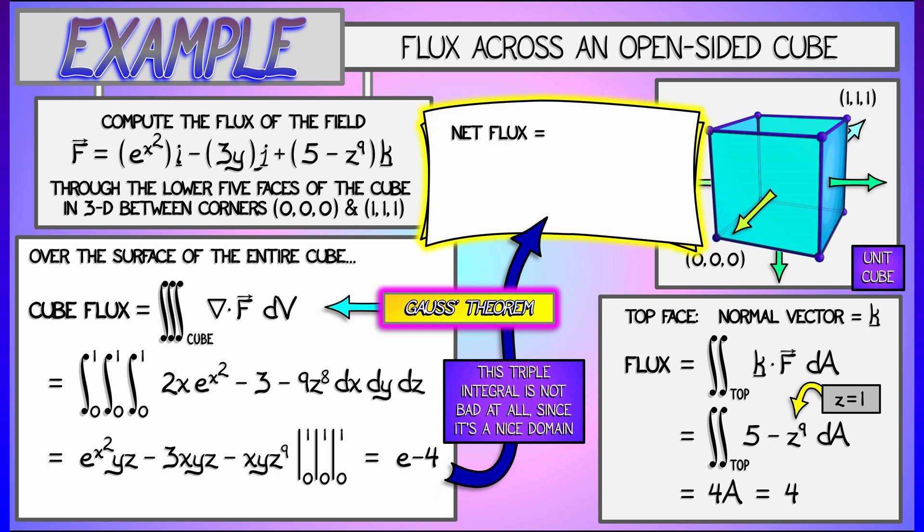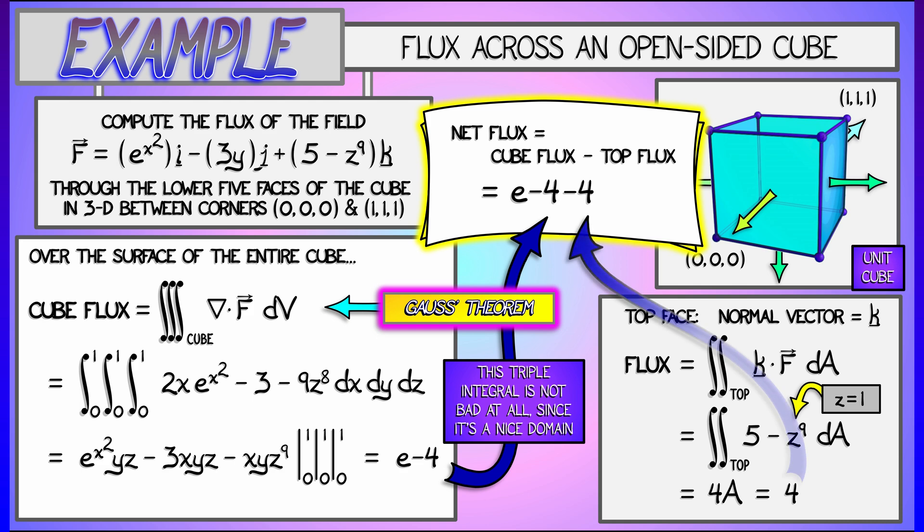And now that's it. We're done, because what I can do is I can say the net flux is the total flux out of the entire cube boundary minus that top flux. That's e minus 4 minus 4 giving a final answer of e minus 8. That is one way that you can use Gauss' theorem even in settings where it doesn't immediately seem applicable.